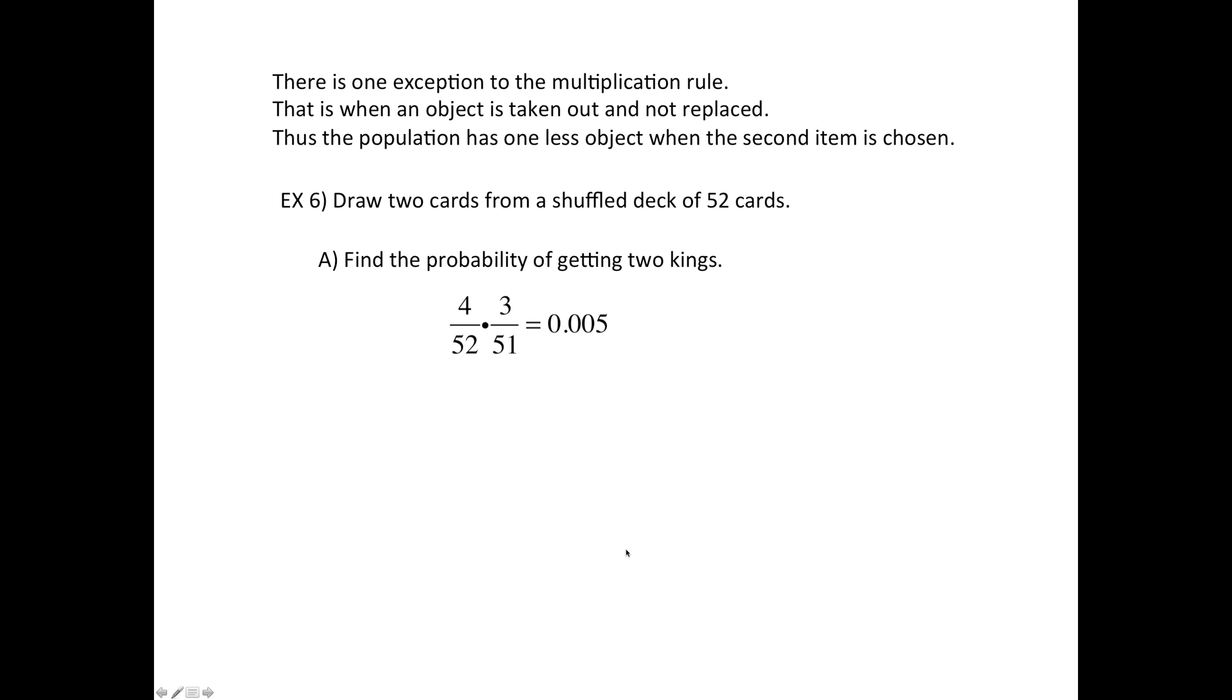Then what happens? So four out of 52 is for the first one to be a king. Now this is for the second card.